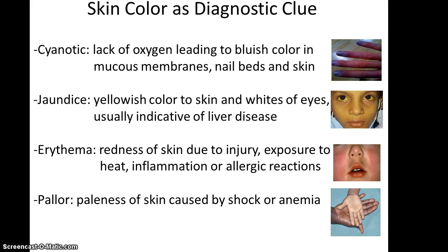You can also look at the skin and see some diagnostic clues. If your skin in your fingers or toes is blue or cyanotic, then they lack enough oxygen. A jaundiced or yellow skin can indicate the presence of liver disease. Erythema or redness of the skin can be a sign of damage or overexposure to heat, the sun, or an allergic reaction. And pallor of the skin could be caused by anemia or by shock.